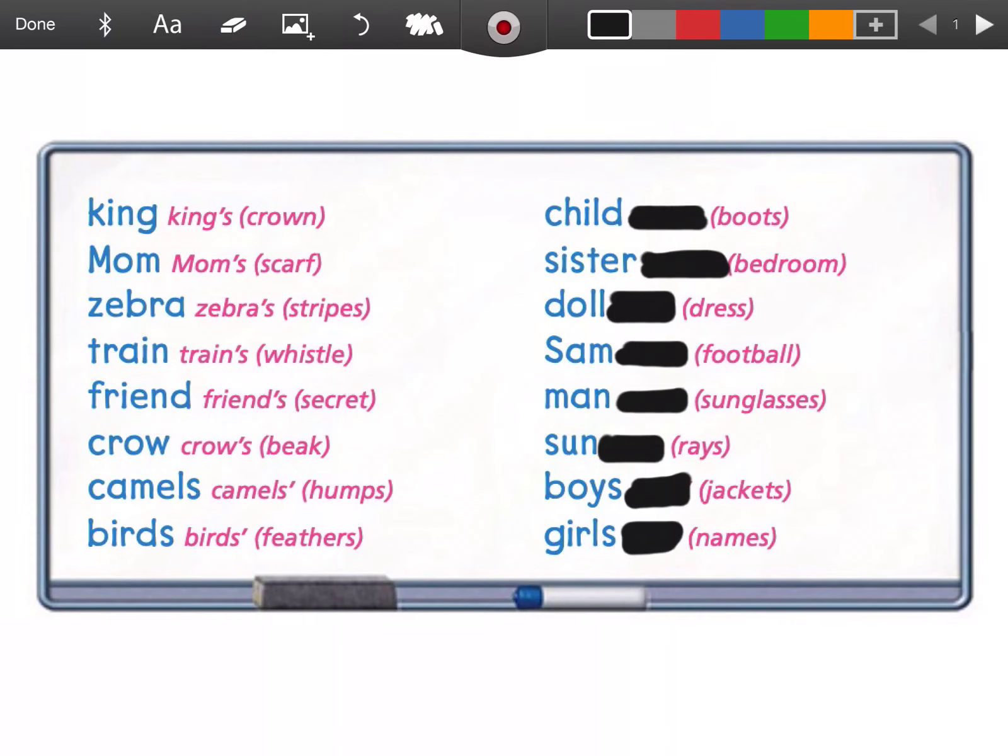All right, here we go. Next row. So the child owns the boots. They're the child's boots. My sister has a bedroom. That's my sister's bedroom. This doll wears a dress. It's the doll's dress.